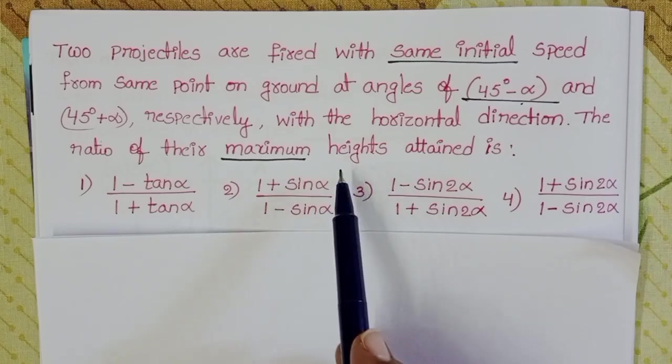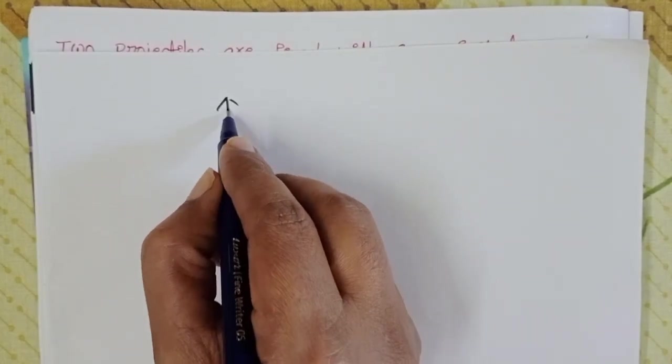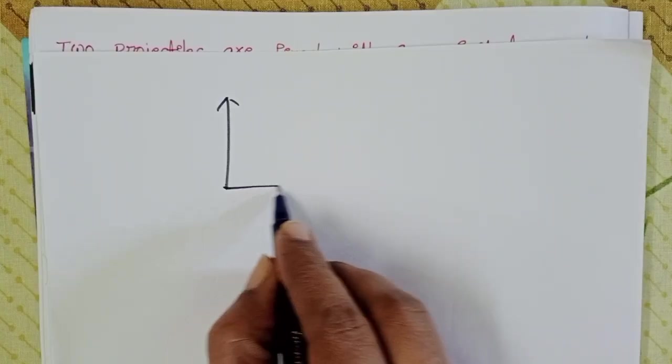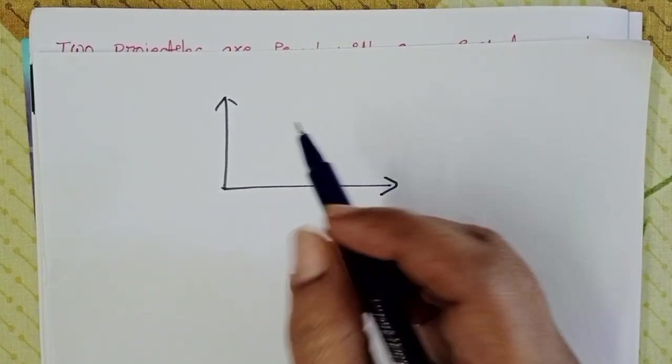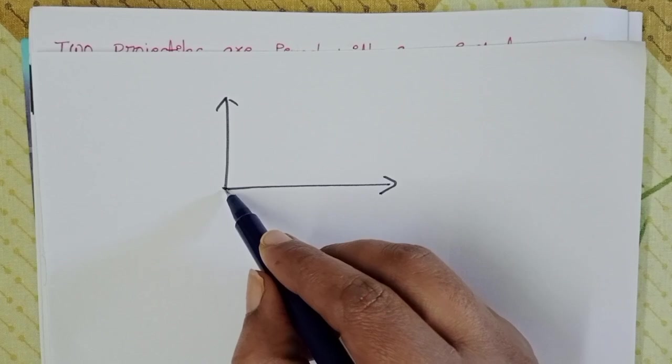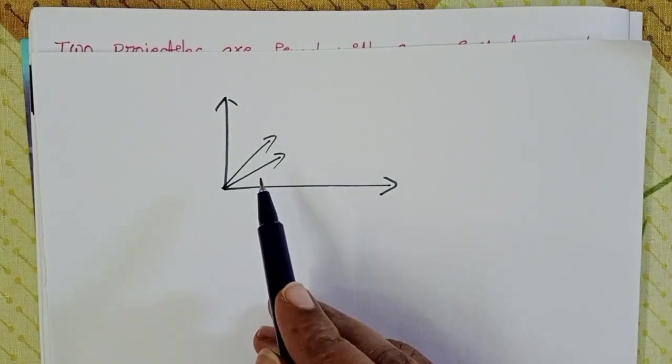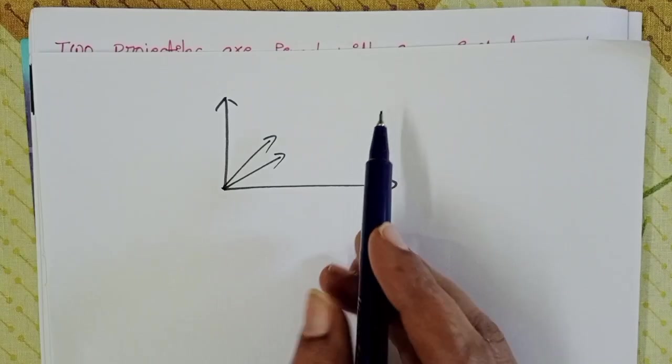The ratio of their maximum heights attained is: Two projectiles are projected from the same point and also with the same initial velocity, but angles are different. We have to find out the ratio of their maximum heights.